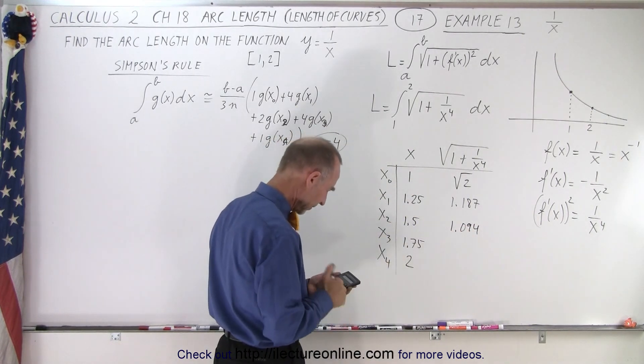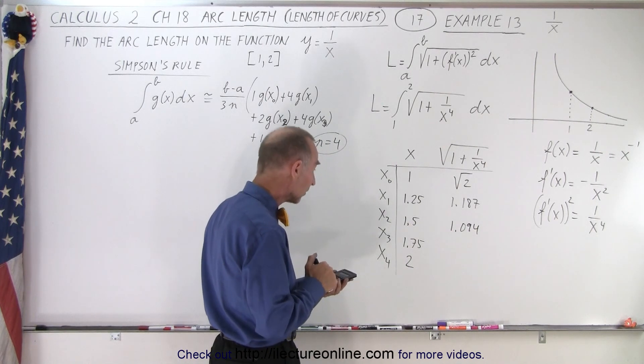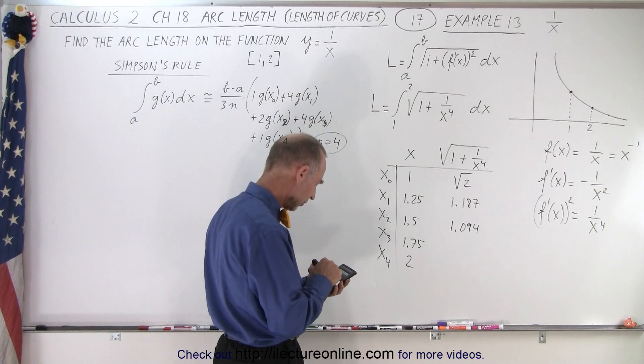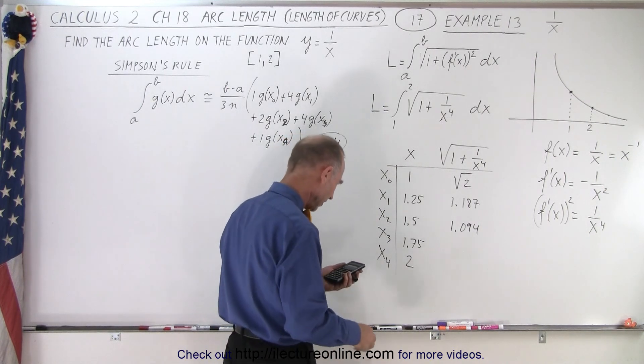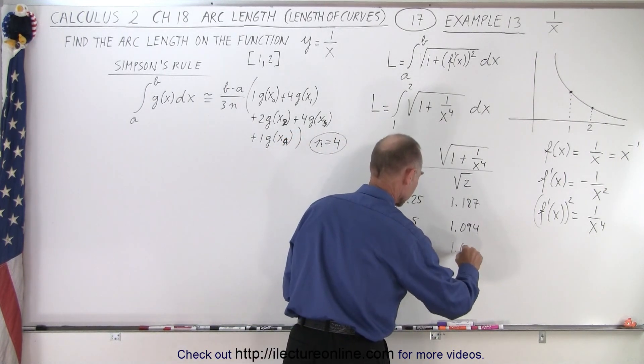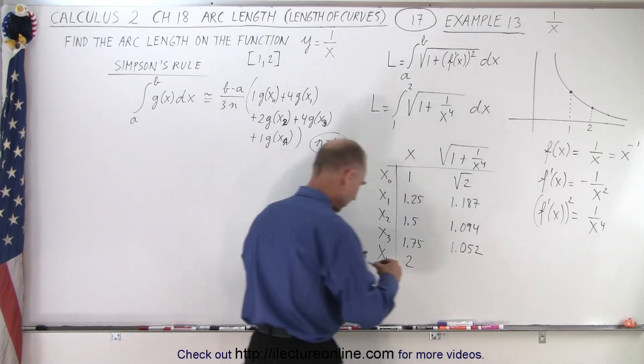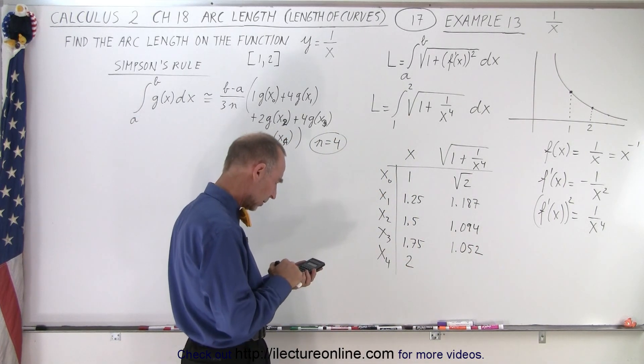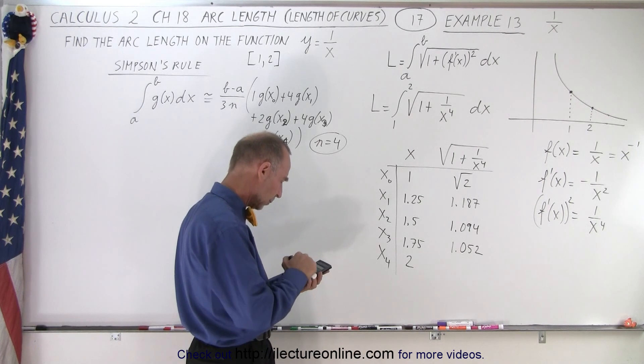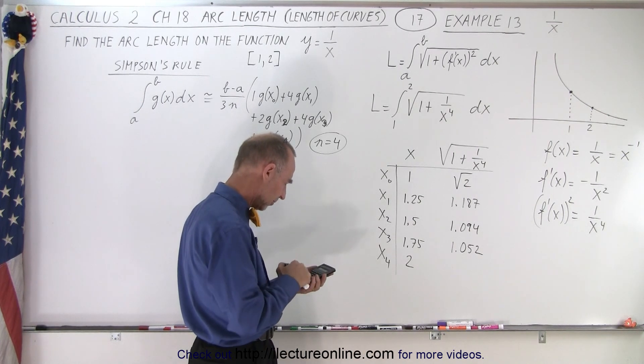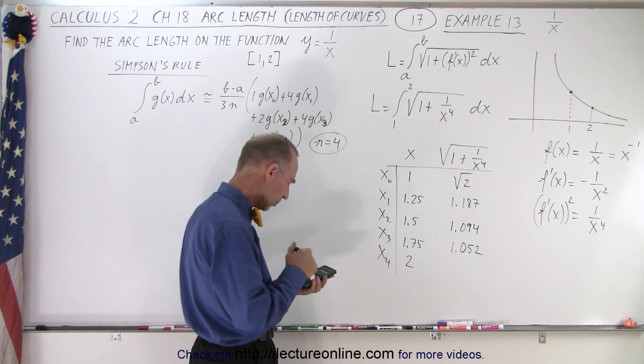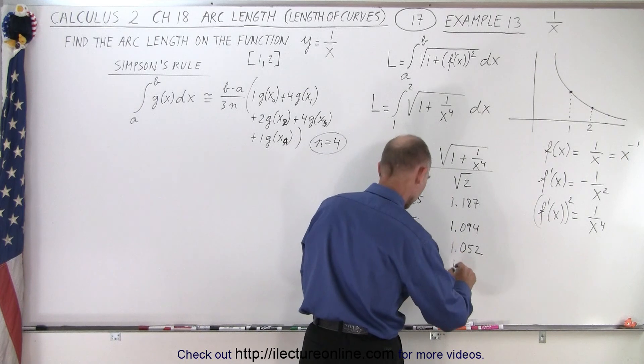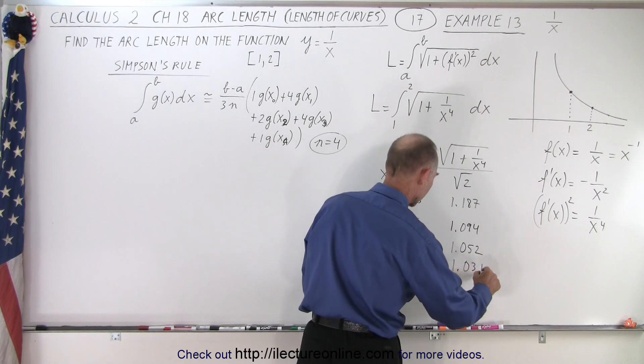All right, 1.75 to the fourth power. Take the inverse. Add to 1. Take the square root. 1.052. And finally, 2. That would be 1. Let's see here. Clear. 2. Take the inverse. Plus 1. Take the square root. 1.031. 1.031. All right. Close enough.